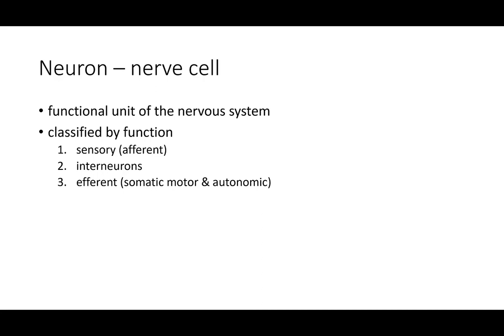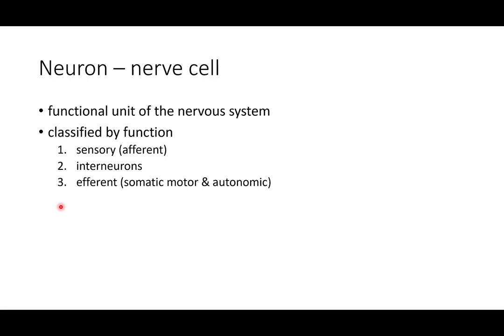A neuron cell is the smallest unit of our nervous system — we call it a functional unit because it's the smallest unit that can function on its own. We can classify nerve cells by their function: we have sensory neurons, which send signals to the brain and are referred to as afferent; interneurons; and efferent neurons, which send signals from the central nervous system to our muscles or target tissues.